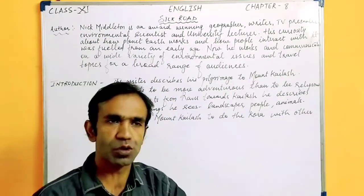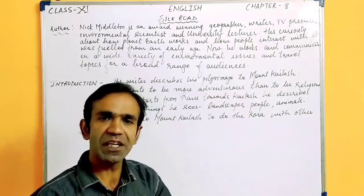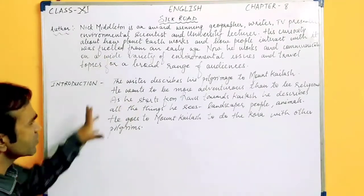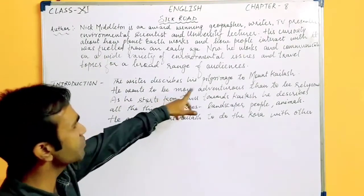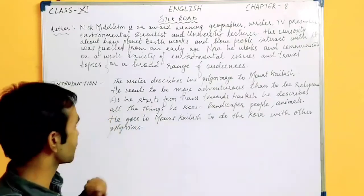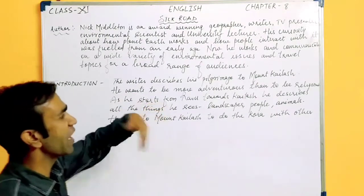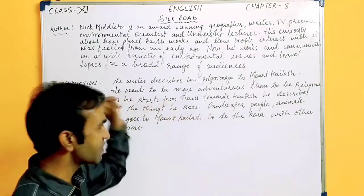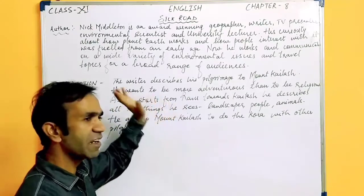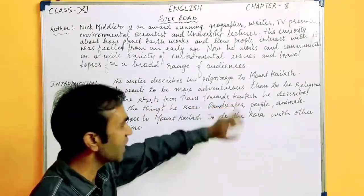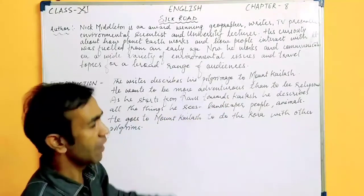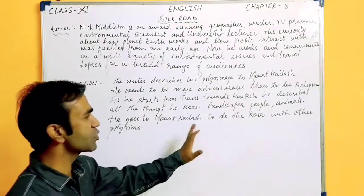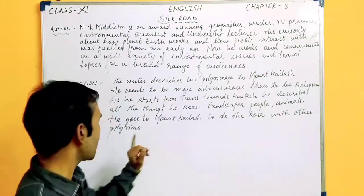That means from students of the university to school students. The introduction of this chapter, Silk Road: the writer describes his pilgrimage to Mount Kailash, here in the Himalayas. He wants to be more adventurous than to be religious. As he starts from Rahu, a place there in the Himalayas, towards Kailash, he describes all the things he sees — the landscape, people, animals. He goes to Mount Kailash to do the Kora with other pilgrims.